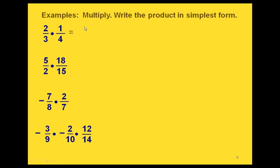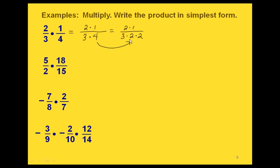Here are some multiplication problems for us to do. Let's write out what our multiplication looks like: we have 2 times 1 on the top and 3 times 4 on the bottom. Before we start doing any actual multiplication, let's write anything we can with its prime factorization — so the 4 we write as 2 times 2. We can see that we have a 2 in common between the top and the bottom, so we cancel those out. We have 1 left on the top, so we have 1 over 3 times 2. There are no more common factors, so we write that as 1 sixth in simplest form.